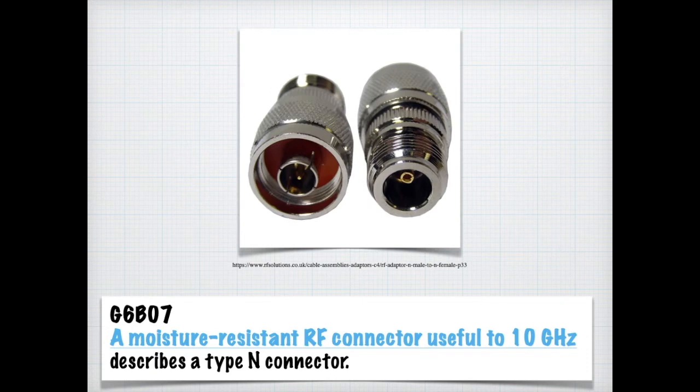In ham radio, you need to definitely know the different types of connectors that you might be dealing with. And one of the ones that is common is an N-type connector, which you can see in the photo. So you need to know what describes it. And for the exam, you just need to know that a moisture resistant RF connector useful to 10 gigahertz describes a type N connector. And you can see that this would make a nice weather seal and make a nice connection.